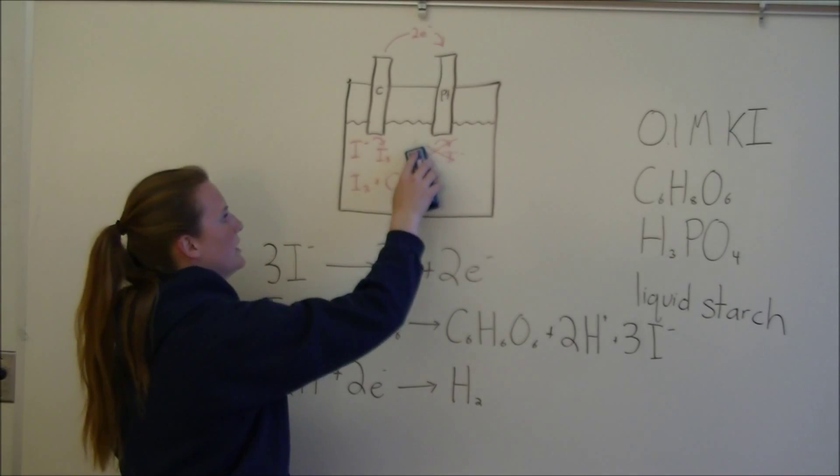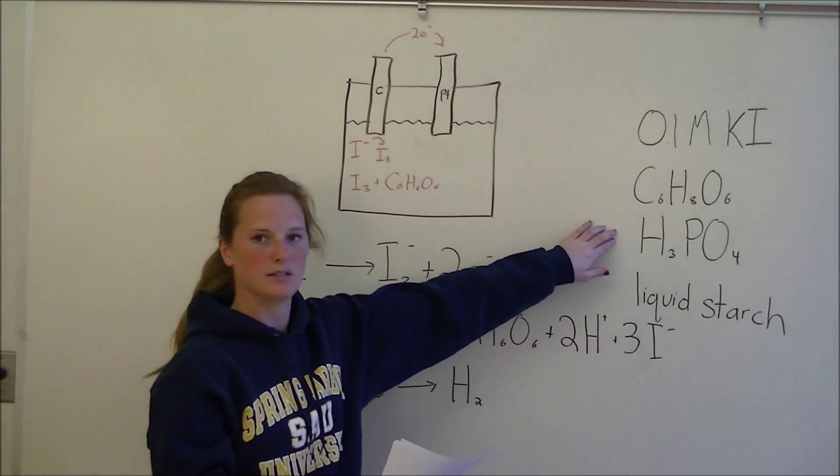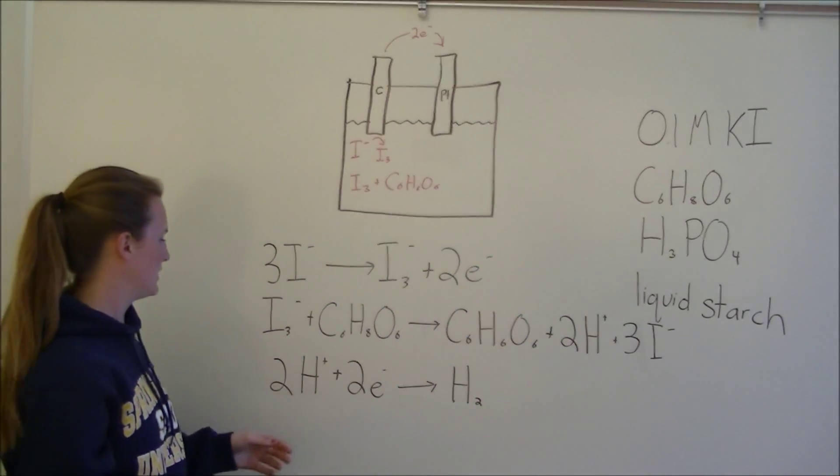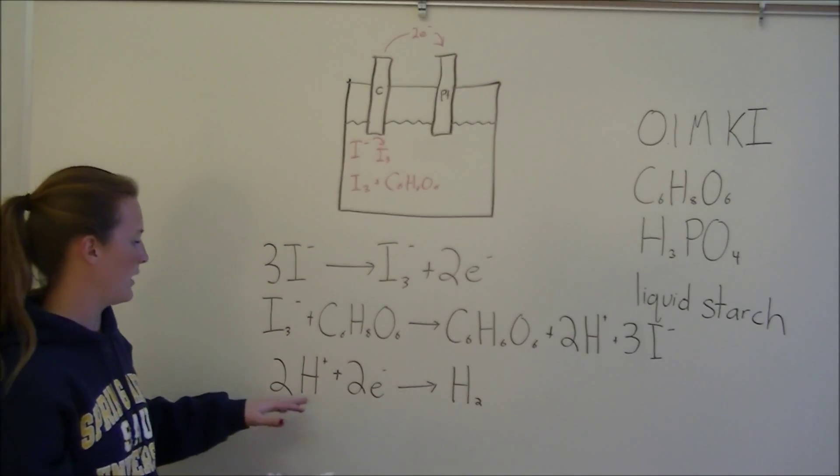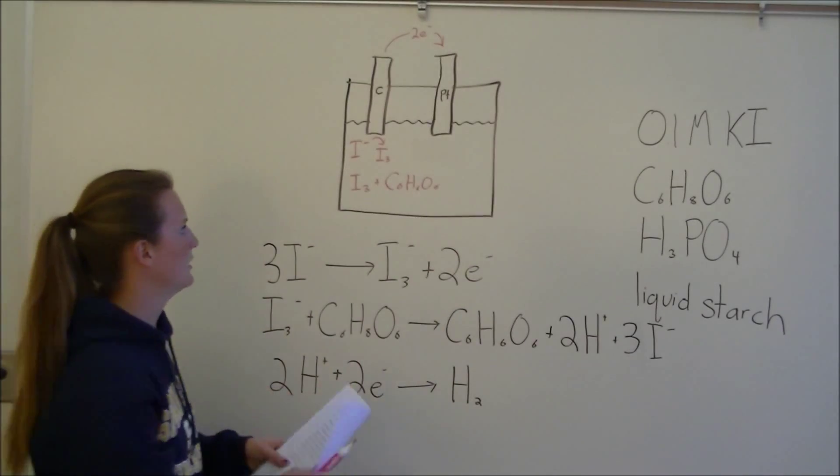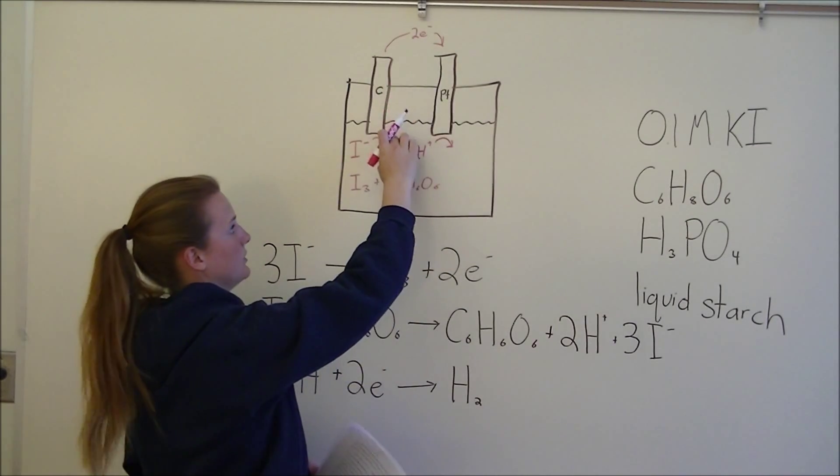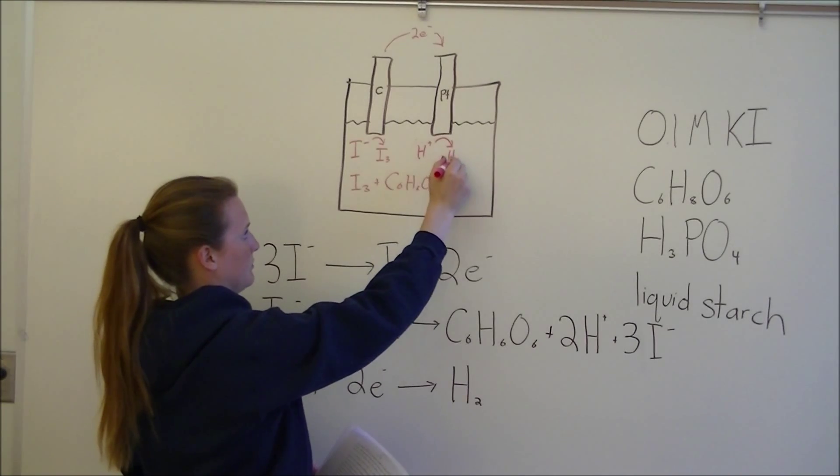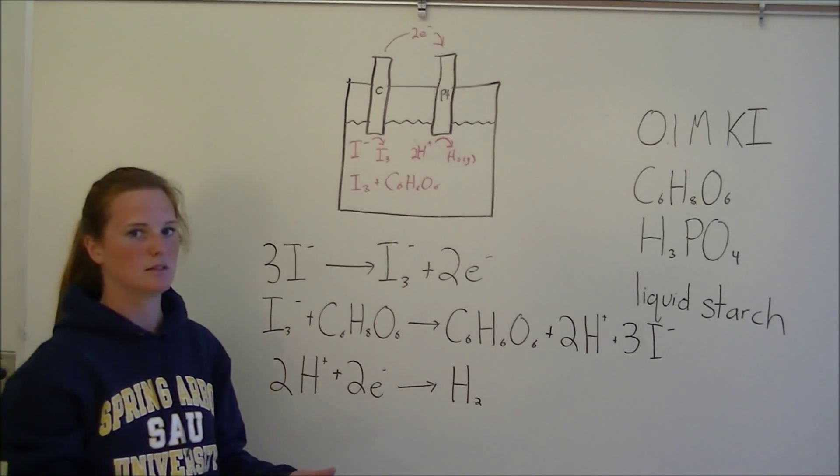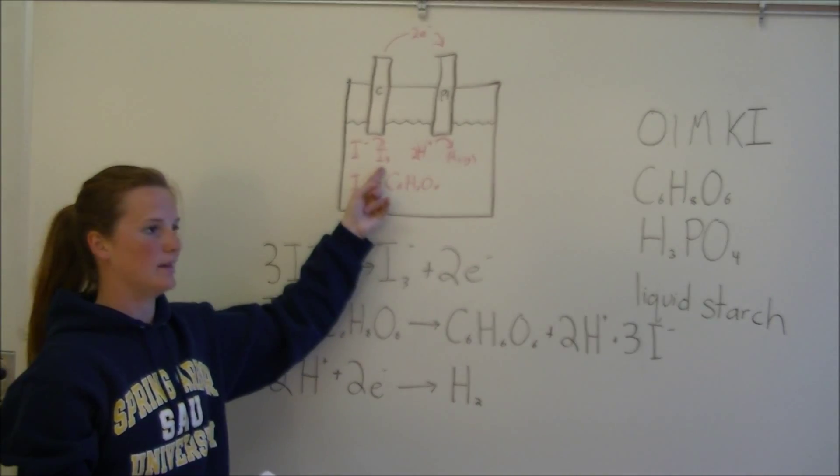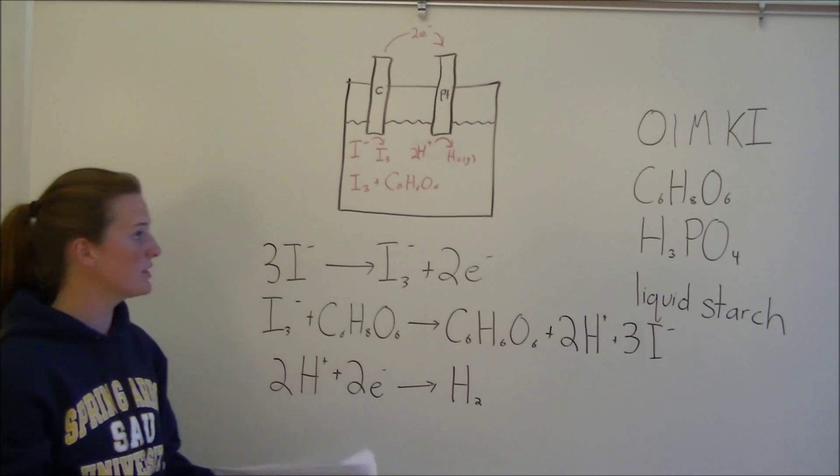In order to deal with that and make sure it doesn't happen, that's why we put in the phosphoric acid. At our cathode, we're going to have two protons from that phosphoric acid take those electrons and make some hydrogen gas. This eliminates the problem of having our iodine being reduced. Instead, protons are being reduced.